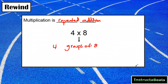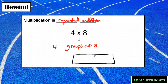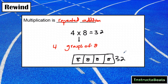If you were to draw that with a tape diagram, or what I like to call a part-whole model, you would draw this out and have 4 groups, and then each group would have 8 in there. Obviously 4 times 8 is 32, but this is what it would look like. That's going to be important to know as we continue throughout this lesson.